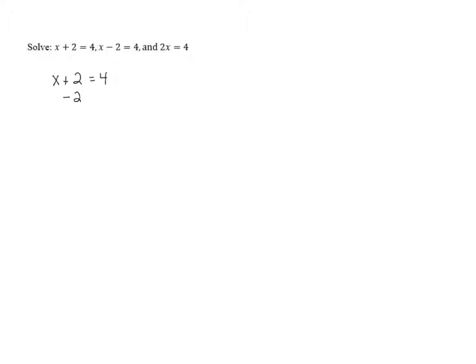However, with an equation, whatever we do to one side, we have to do to the other side to keep it balanced. So here, we need to subtract 2 from both sides of the equation. On the left-hand side, when we subtract 2, the positive 2 and negative 2 cancel out, because 2 minus 2 is 0, and that leaves us with just x on the left-hand side.